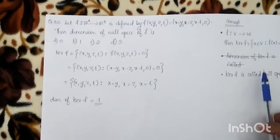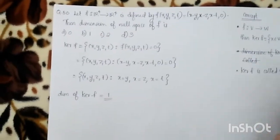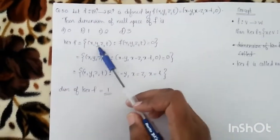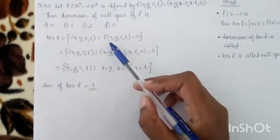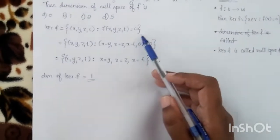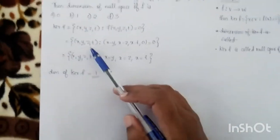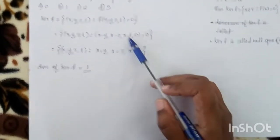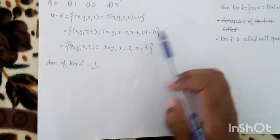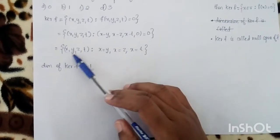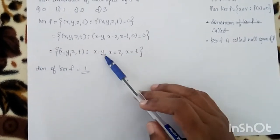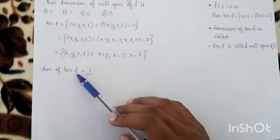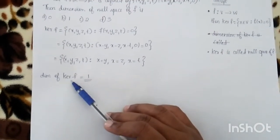The kernel of f is the set of all (x,y,z,t) such that f(x,y,z,t) = (0,0,0,0), meaning x-y=0, x-z=0, x-t=0. This gives x=y=z=t. So the kernel consists of vectors of the form (x,x,x,x), which is spanned by one vector. Therefore the dimension of the null space of f is 1.